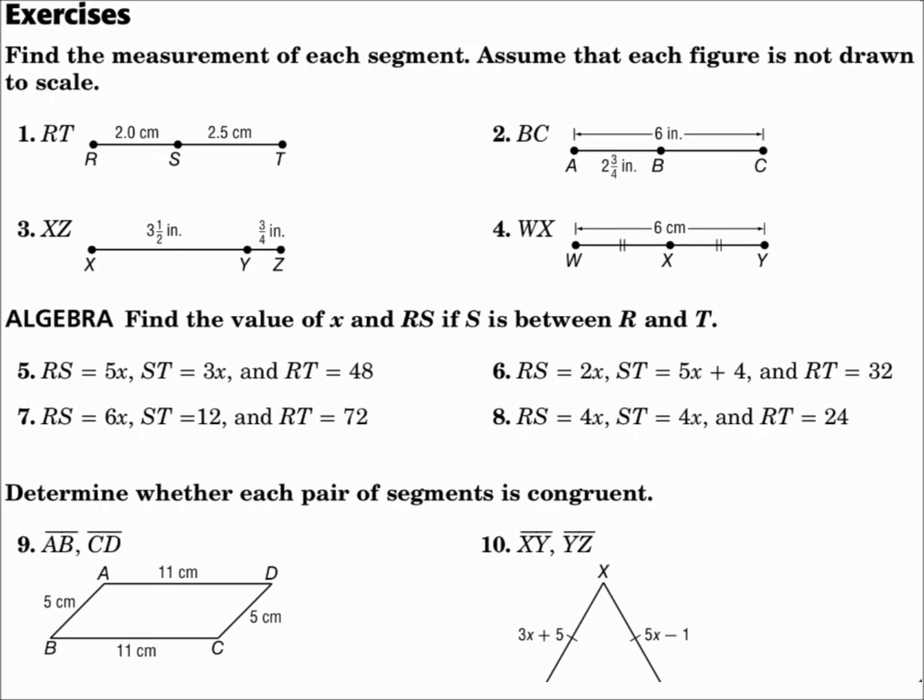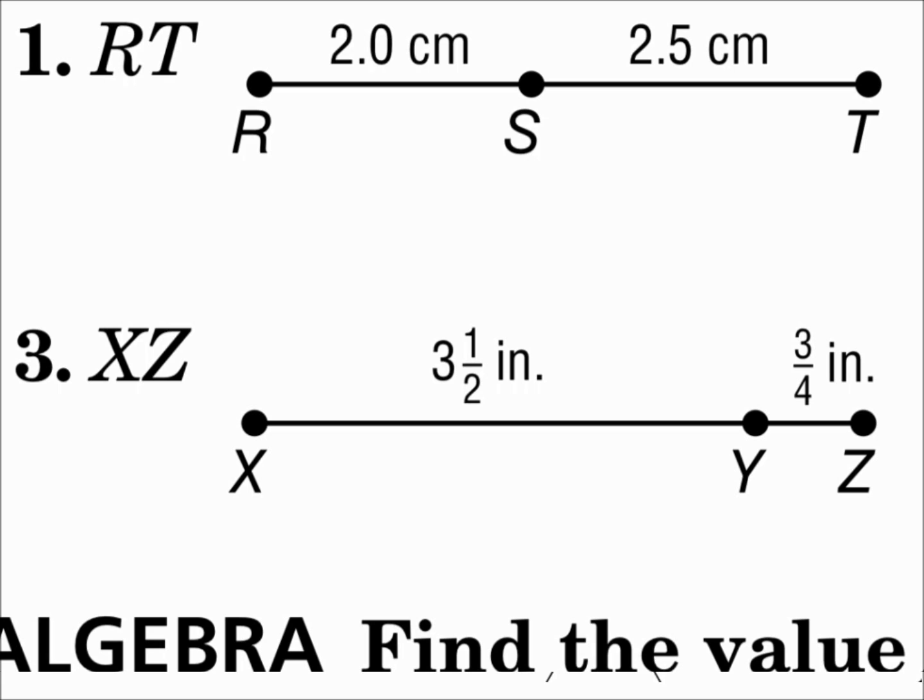Find the measurement of each segment. Assume that each figure is not drawn to scale. The measure of segment RT. Well, segment RT is divided into parts, and the parts add up to equal the whole thing. 2.0 plus 2.5 equals the whole thing, RT. Add those together. 4.5, and that's centimeters, is the length of segment RT.